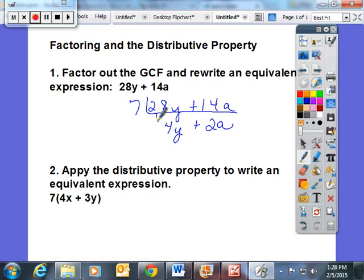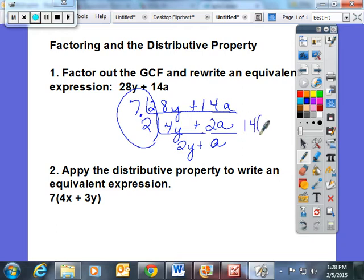4 and 2 at this point are both divisible by 2 as well. 4y divided by 2 is 2y. 2a divided by 2 is 1a. So the answer is: GCF I'm going to multiply the stuff on the side, 7 times 2 is 14, and in parentheses you are left with 2y plus a.